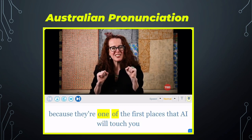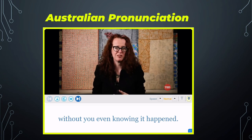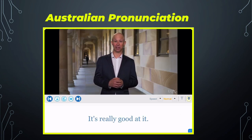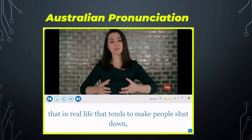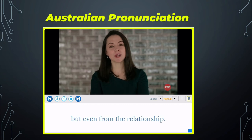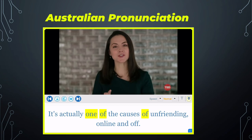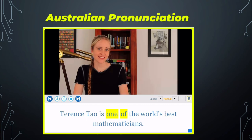Lifts are interesting because they're one of the first places that AI will touch you without you even knowing it happened. One of the major functions is that it communicates emotion — it's really good at it. That tends to make people shut down not just from the conversation but even from the relationship, and it's actually one of the causes of unfriending, online and off.